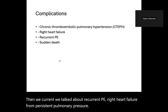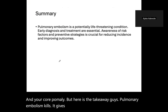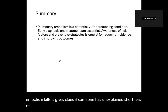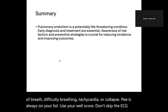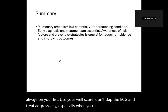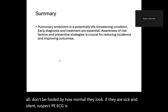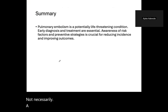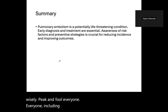Recurrent PE and right heart failure from persistent pulmonary hypertension can cause cor pulmonale. Here's the takeaway: pulmonary embolism kills, but gives clues. If someone has unexplained shortness of breath, tachycardia, or collapse, PE is always on your list. Use your Wells score. Don't skip the ECG. Treat aggressively when you see ECG changes. Don't be fooled by how normal they look if they are sick and silent — suspect PE. The ECG is a window here, not a diagnostic god. National guidelines back you up — use them wisely. PE can fool everyone.